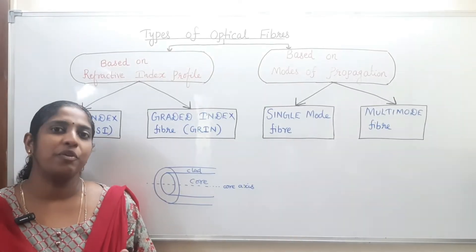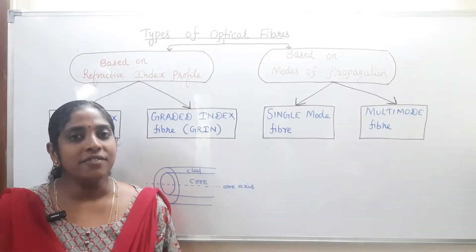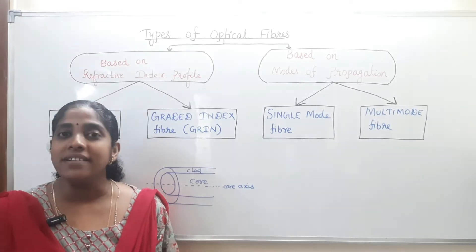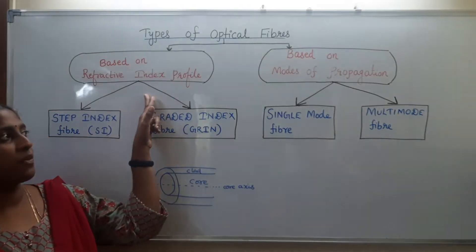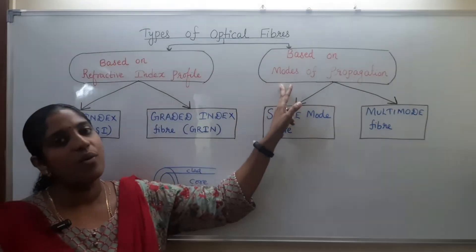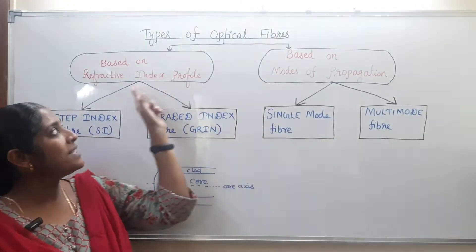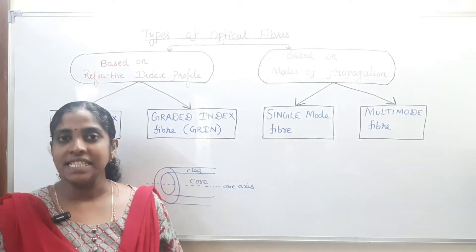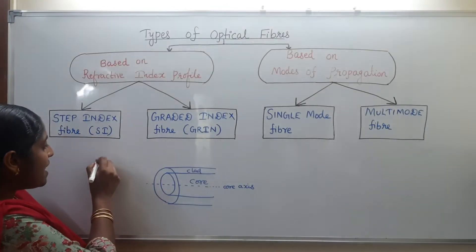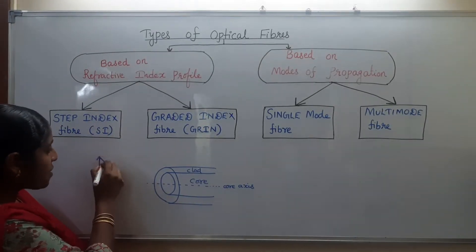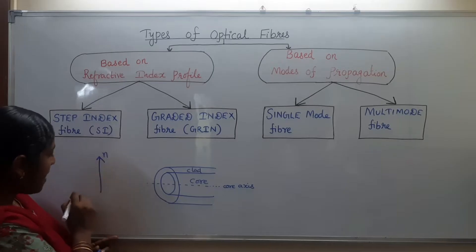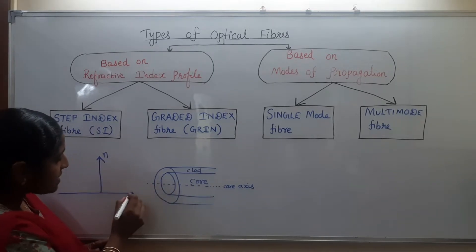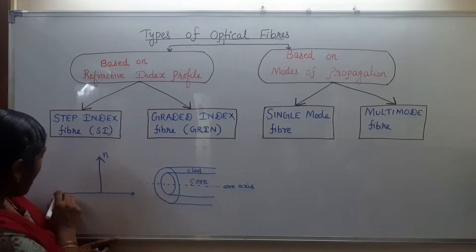Now how can we classify optical fibers? Optical fibers are classified mainly based on the refractive index profile and based on modes of propagation. The refractive index profile is a plot of refractive index on one axis and the distance from the core axis on another axis.